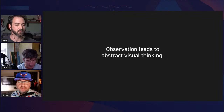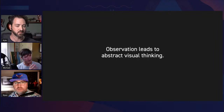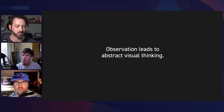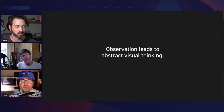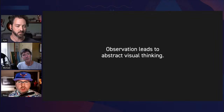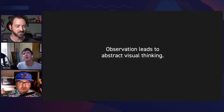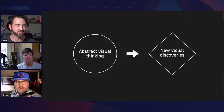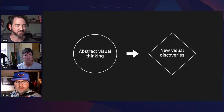But why do we really need to be good at observing? Because observation leads to abstract visual thinking. When we start to abstract things, it turns into just form. It gives you the ground material to be able to combine anything with anything else — it lets you create new meaning out of common objects. Abstract visual thinking leads to new visual discoveries, because once we start to crop and abstract, it starts to look new, like a new language.